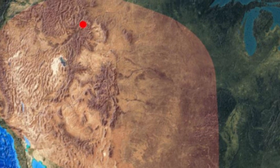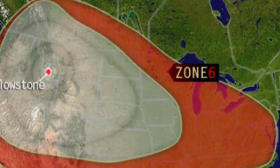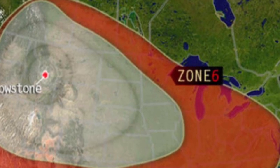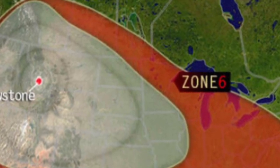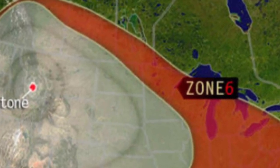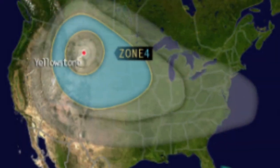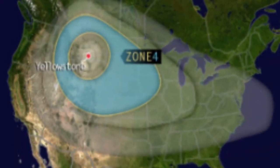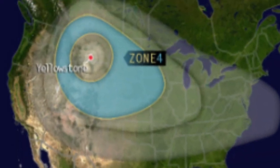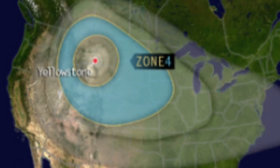The severity of the blast decreases further out from Yellowstone National Park, but extends into Canada, Mexico, and the east coast. Canada, for instance, could see anywhere between four inches to 0.11 inches of ash fall from the sky.